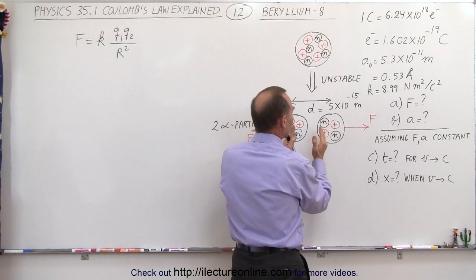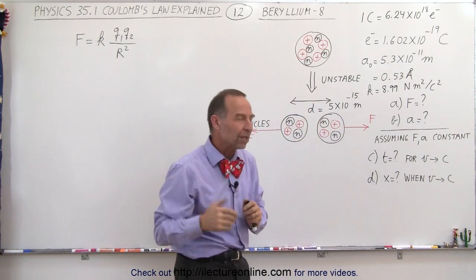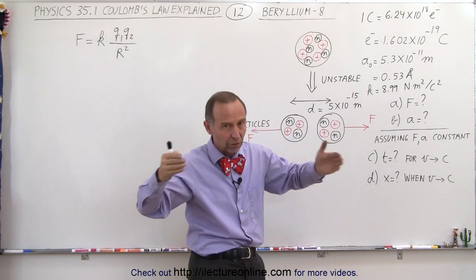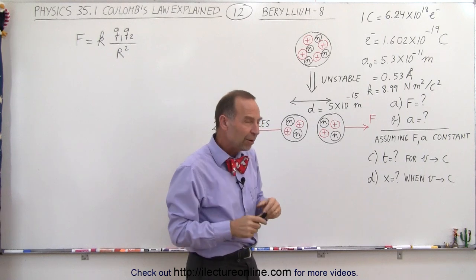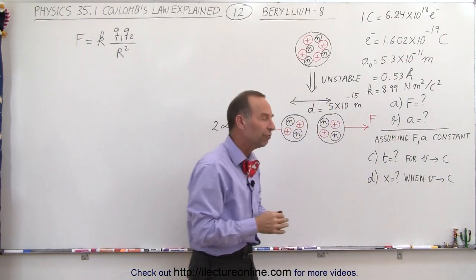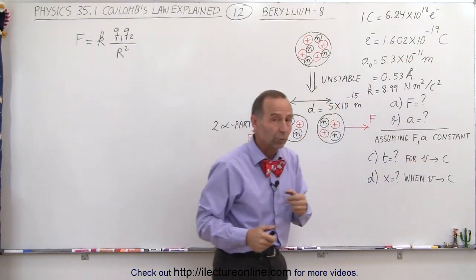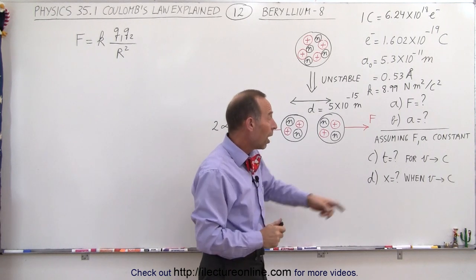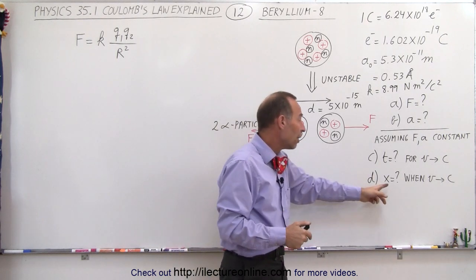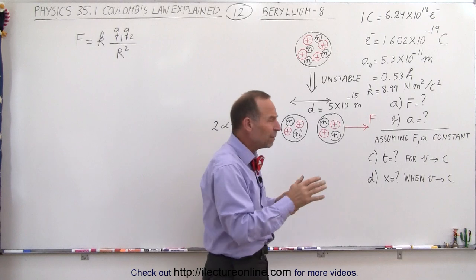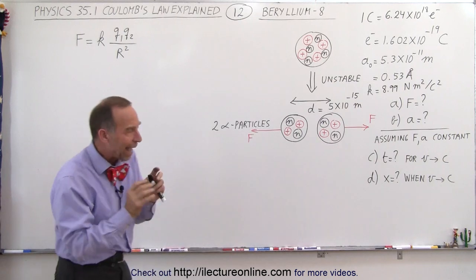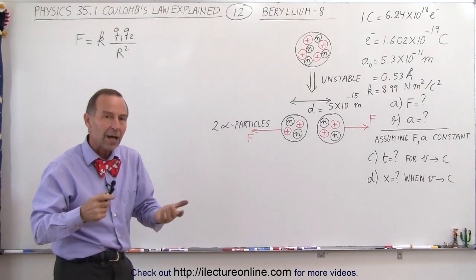Next we're going to calculate the acceleration at that moment, and then we're going to do something interesting. As they go farther apart, the force between them tends to diminish and therefore the acceleration will diminish as well. But if we assume for a moment that the force and acceleration remain constant long enough for the velocity to reach close to the speed of light — which they will tend to do — how long will it take for the two alpha particles to reach a speed close to the speed of light, and how far will the particles have gone? Again, assuming incorrectly that the force and acceleration remain constant, just to get a feel for what happens at this subatomic level.